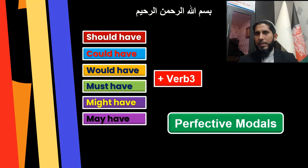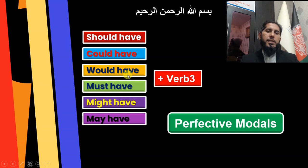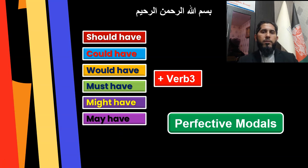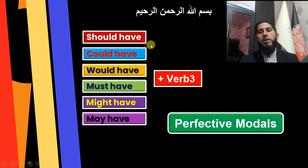Hello everyone, welcome to the Practical English brand. Today I'll be explaining perfective modals. The words that you see over here are called perfective modals according to English grammar: should have, could have, would have, must have, might have, and may have. Keep in mind that we do not use 'will have,' 'can have,' or 'shall have' plus verb third form.